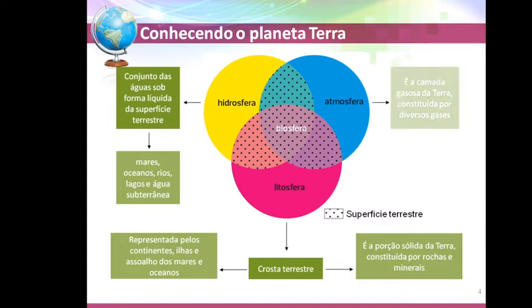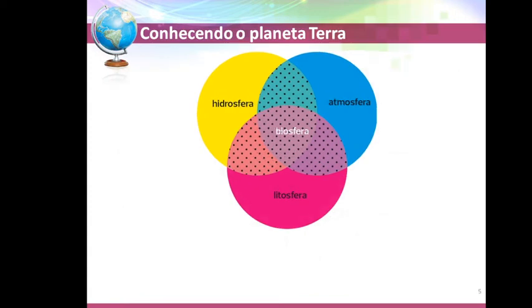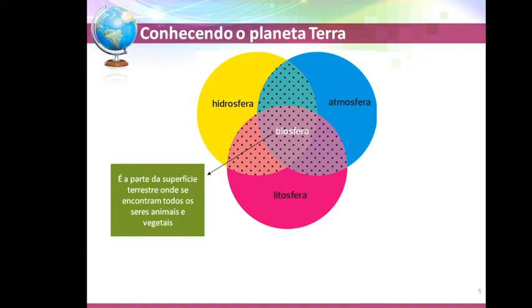A atmosfera é a camada gasosa da Terra, constituída por diversos gases — principalmente oxigênio, que respiramos, nitrogênio e vapor d'água. Existem inúmeros gases na atmosfera, porém esses são os principais. Os três elementos — a litosfera, a hidrosfera e a atmosfera — juntamente com a biosfera, formam a parte da superfície terrestre onde encontram todos os seres animais e vegetais.